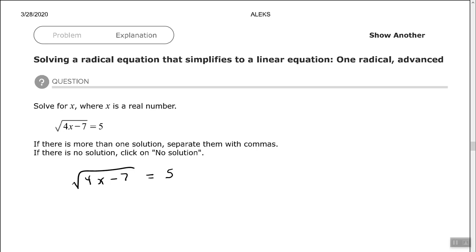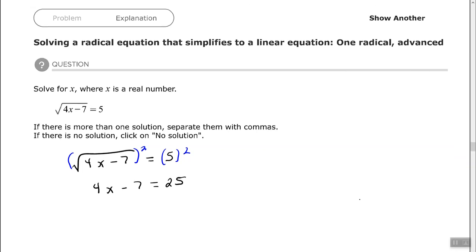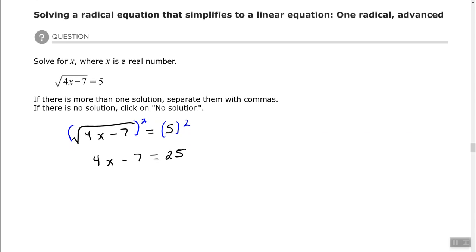So let's undo the radical. All right so 4x minus 7 equals 25. And now we want to solve the equation like we have before. So add 7 to both sides. 25 plus 7 is 32.